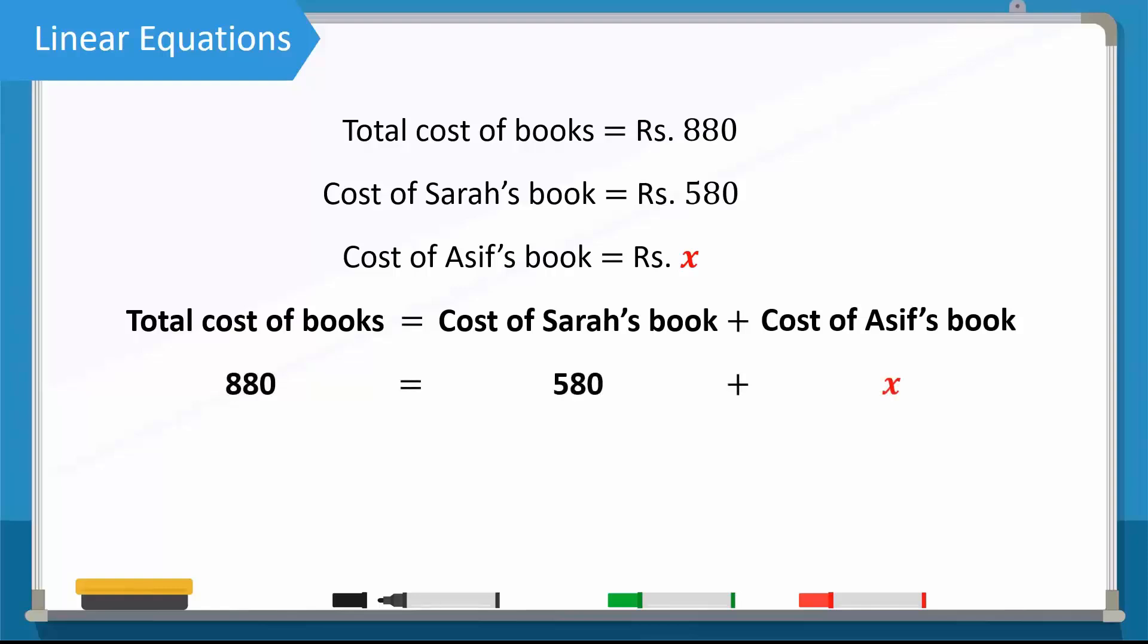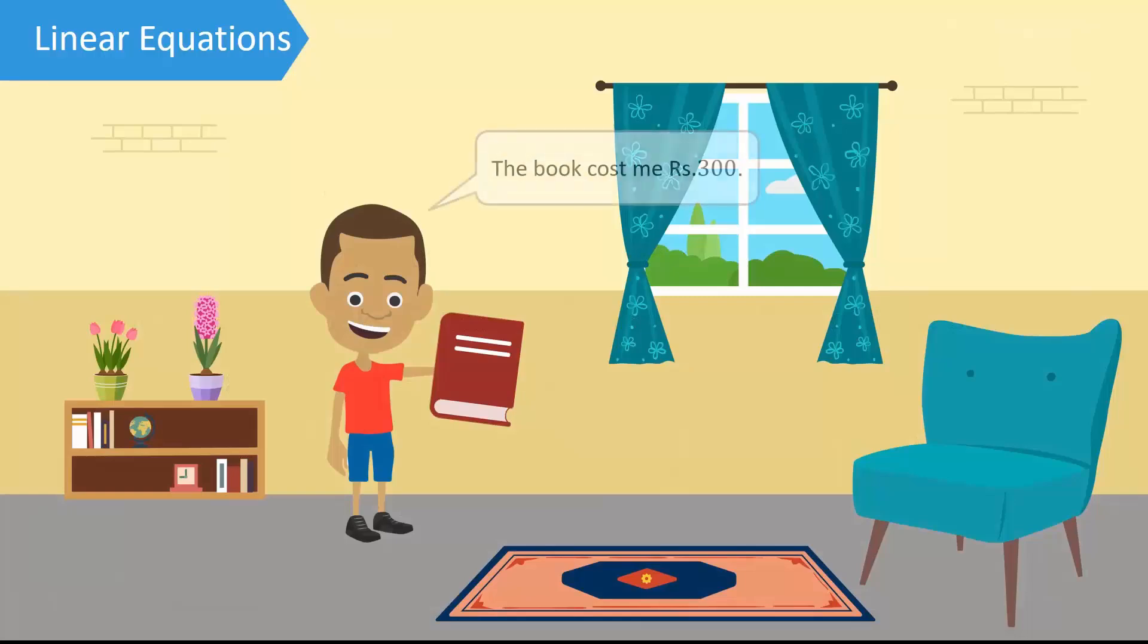880 is equal to 580 plus x. Isolating the variable makes the equation. Hence, the value of x is equal to 300. The value of the variable shows that the cost of Asif's book is 300 rupees.